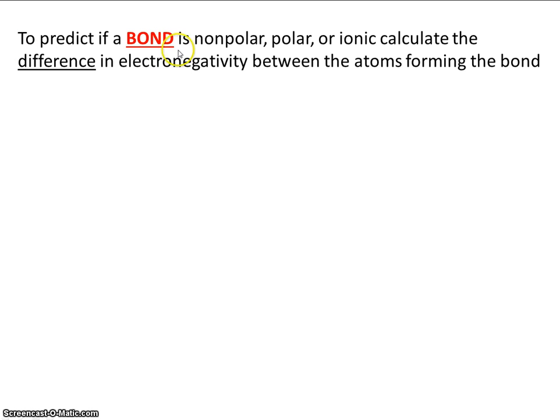Well, to predict if a bond is nonpolar, polar, or ionic, calculate the difference in electronegativity between the atoms forming the bond.